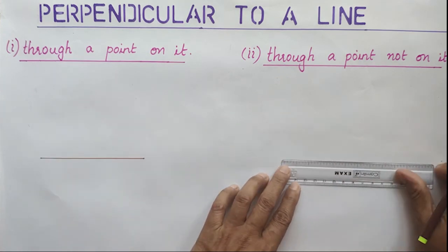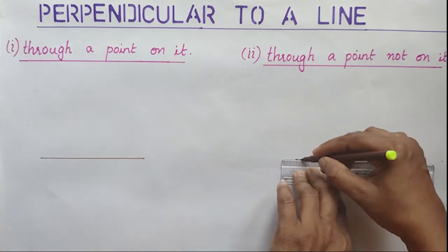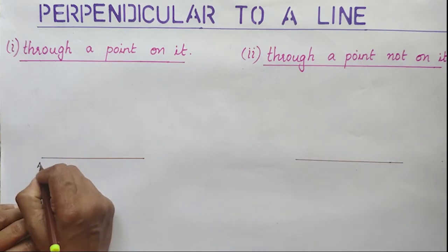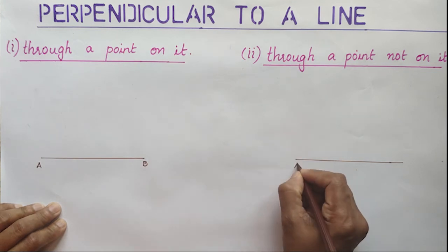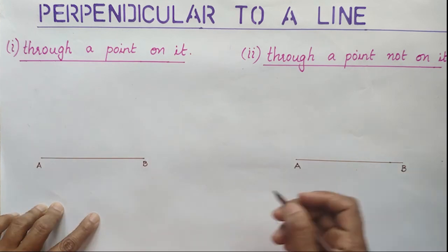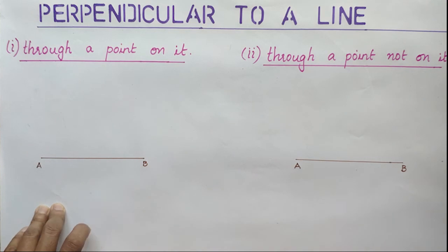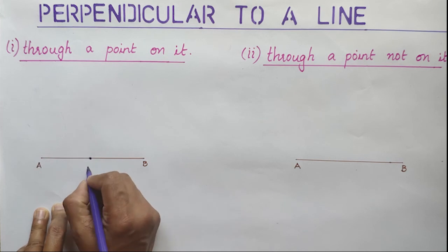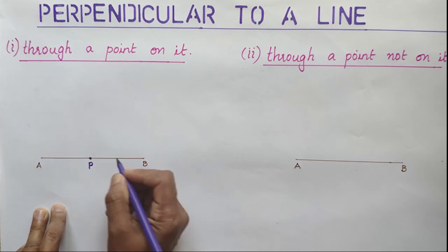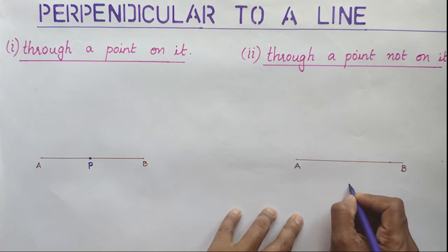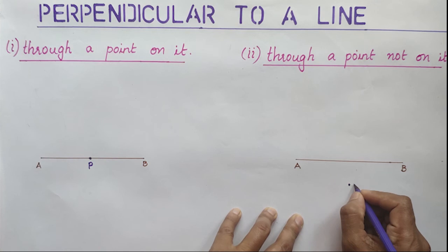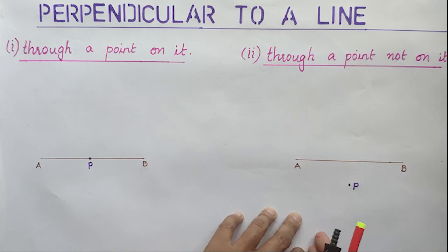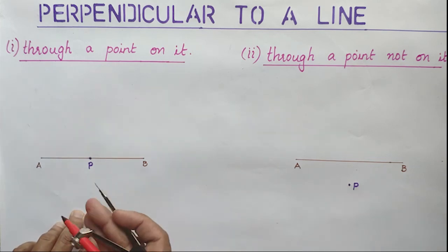In both cases we need to draw a straight line. The name of the line is AB in both cases. In the first case I will take a point on that line — this point is P. In the second case I am taking the point outside the line segment — here this point is also P.